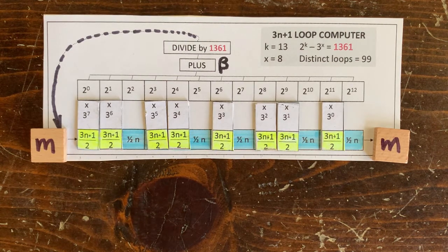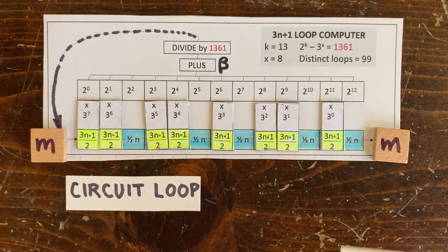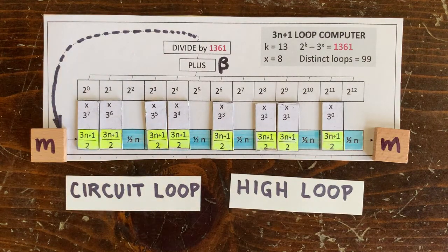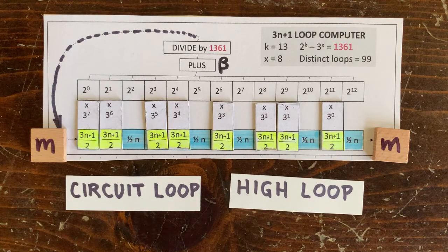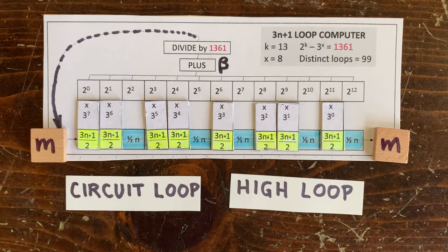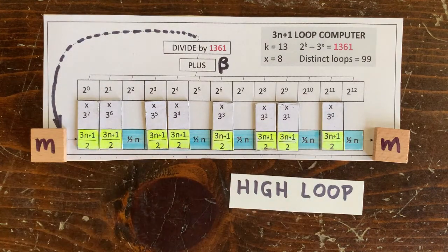Hey, welcome back. Last time we looked at two special kinds of loops of length k. One was the circuit loop with all up moves preceding all down moves. The other was the high loop, whose bottom member is the largest of all loops.